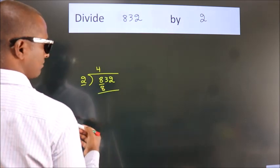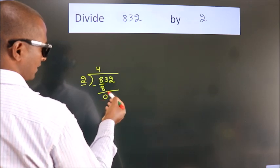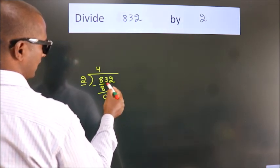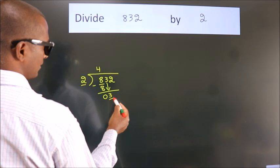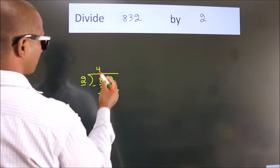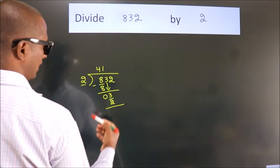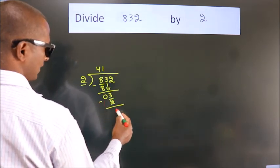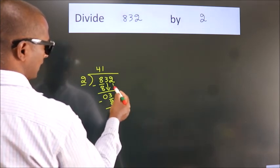Now we should subtract and we get 0. After this, bring down the beside number, so 3 down. A number close to 3 in the 2 table is 2. 1 times 2 is 2. Now we subtract and we get 1.